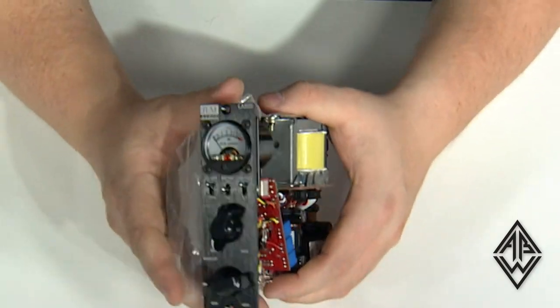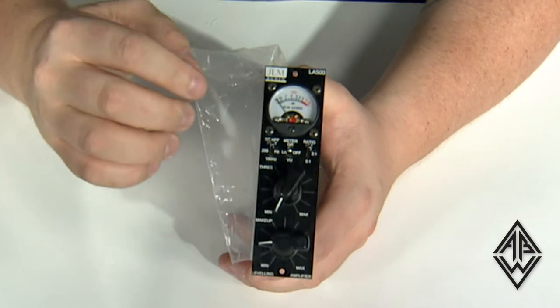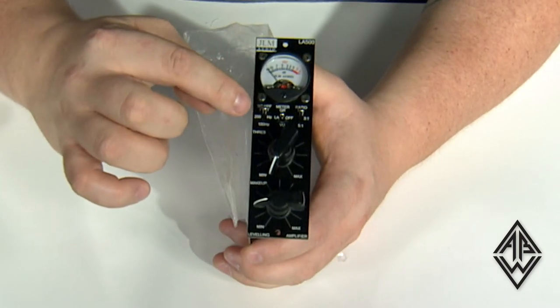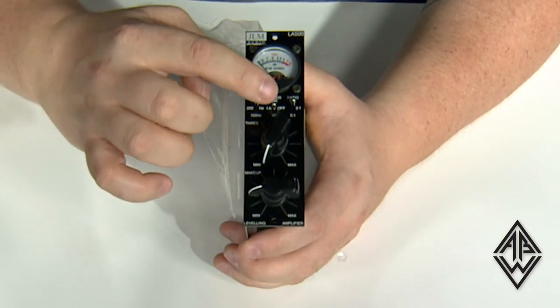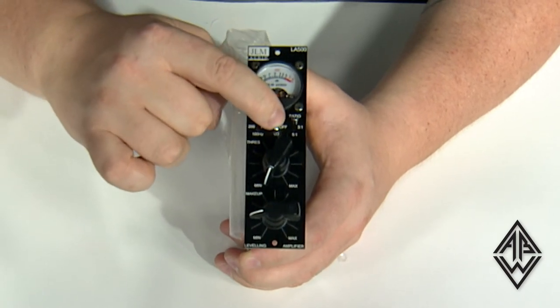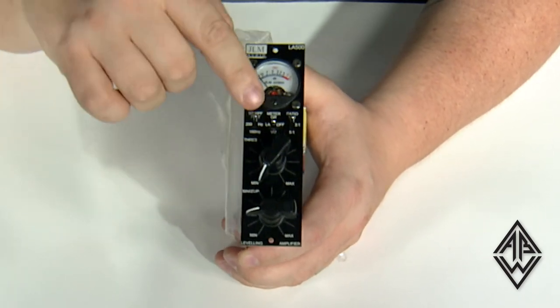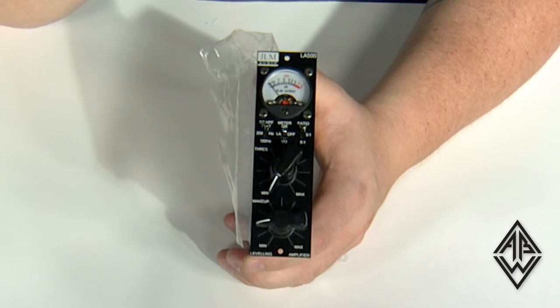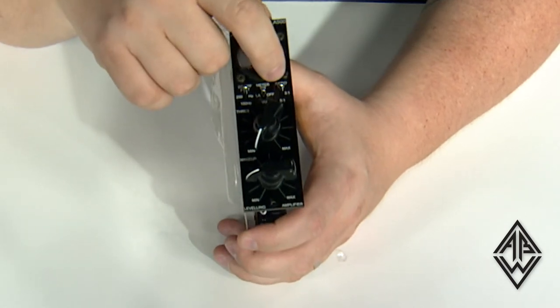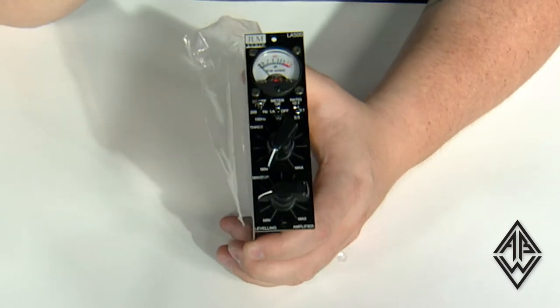Also on the front we see switches for sidechain, switching between gain reduction and VU metering and a middle switch for bypass and a switch for different ratios available.